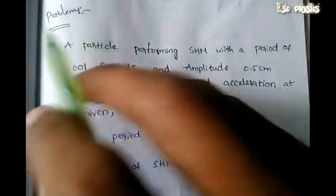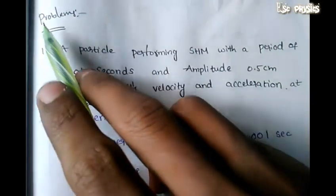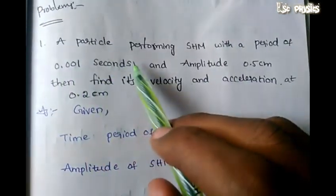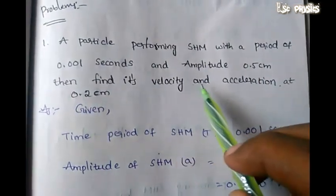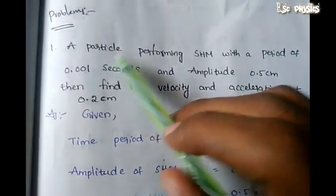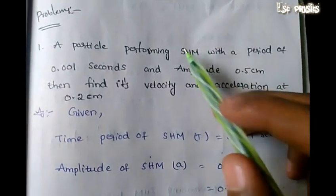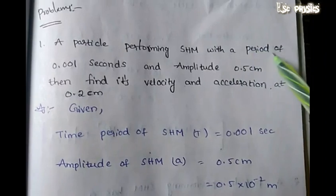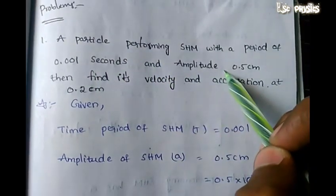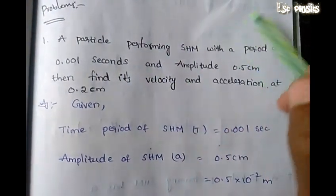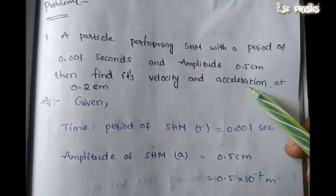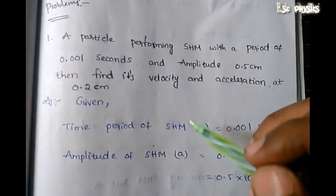Hi friends, welcome to basic tutorials. Problem one: a particle performing SHM with a period of 0.001 seconds and amplitude 0.5 centimeters. Find its velocity and acceleration at a displacement of 0.2 centimeters. So we can find the particle velocity and acceleration.